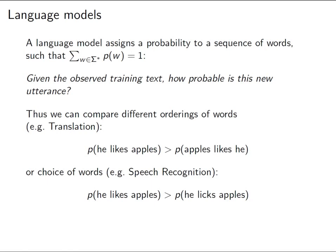This seems like a possibly pointless undertaking to assign probabilities to sentences, but it turns out to be a really fundamental issue which almost everything else we do in this field builds upon. To get some starting intuition for why this is useful, consider these examples. One's from translation: if we have the two utterances 'he likes apples' and 'apples likes he', we want to assign probabilities to each one and compare them.